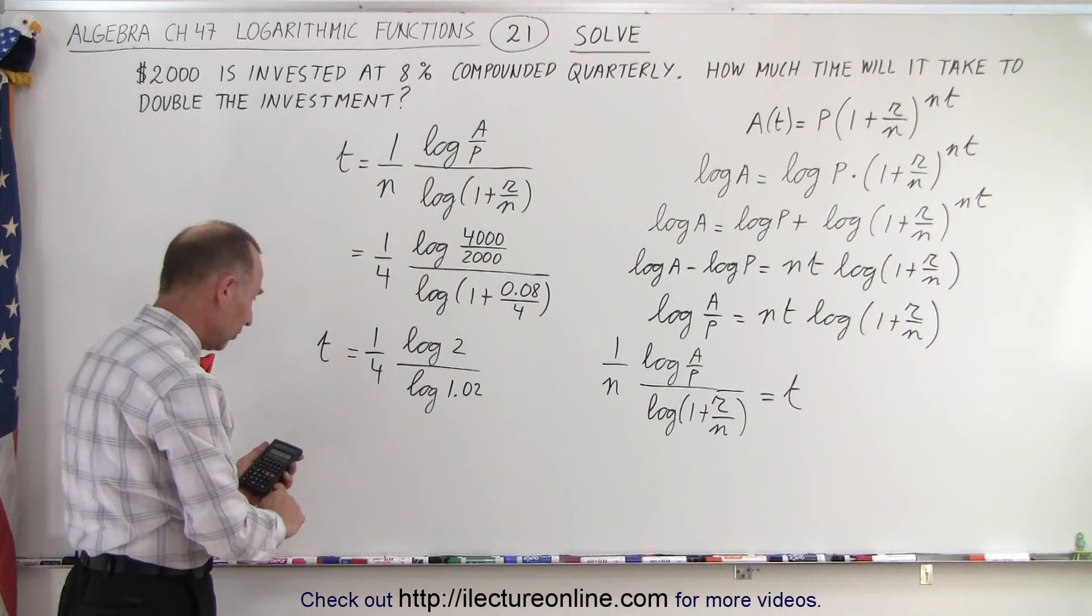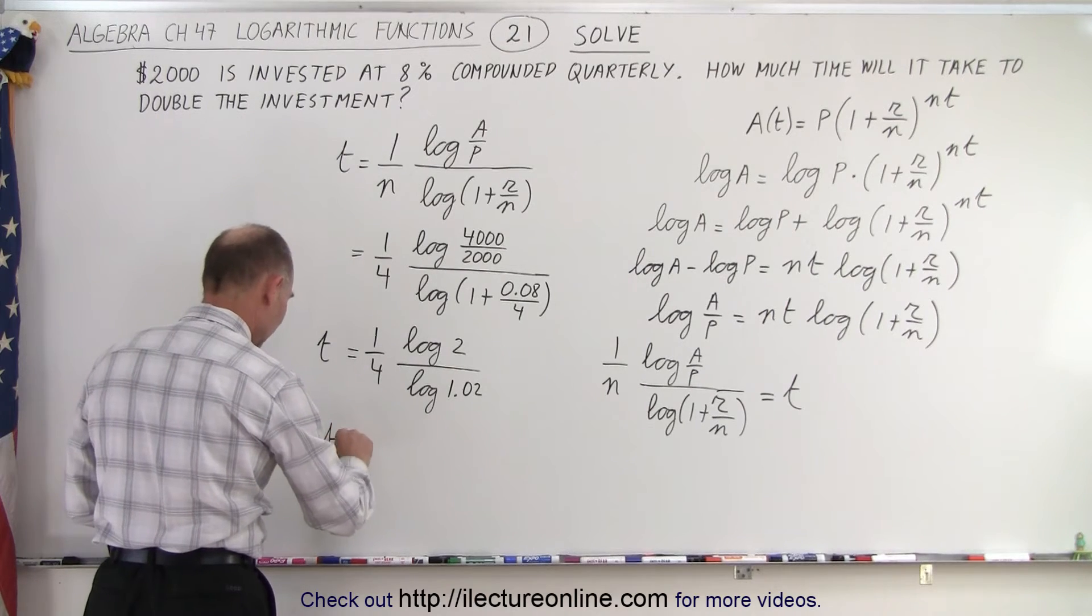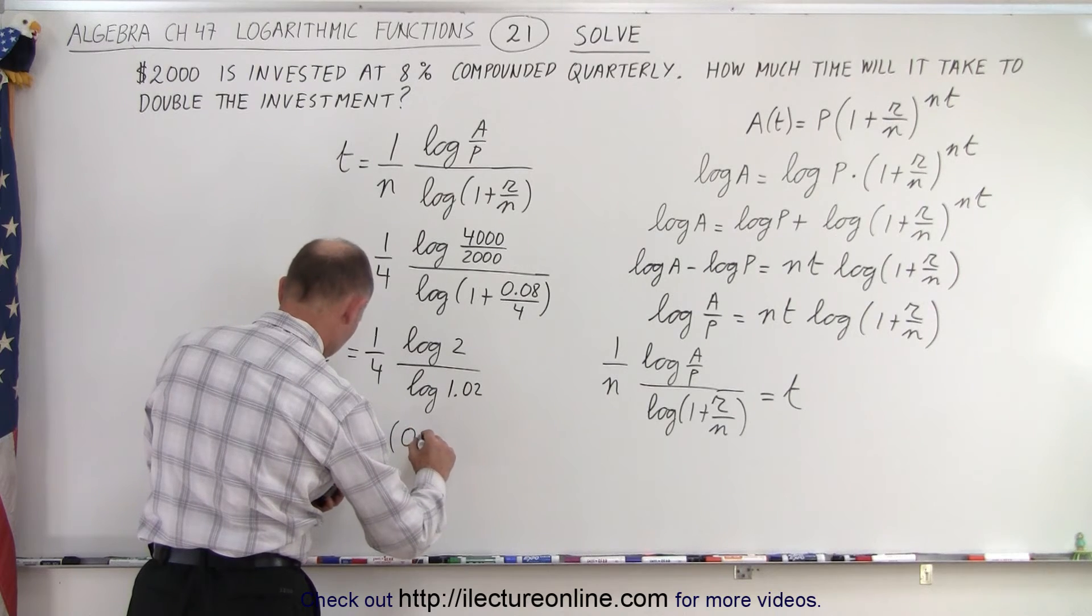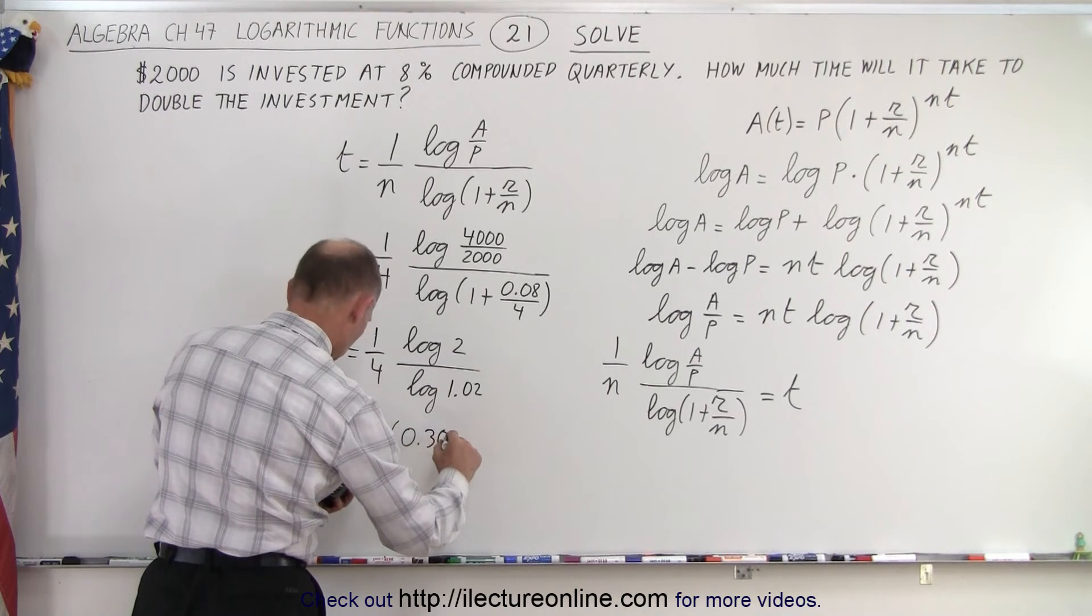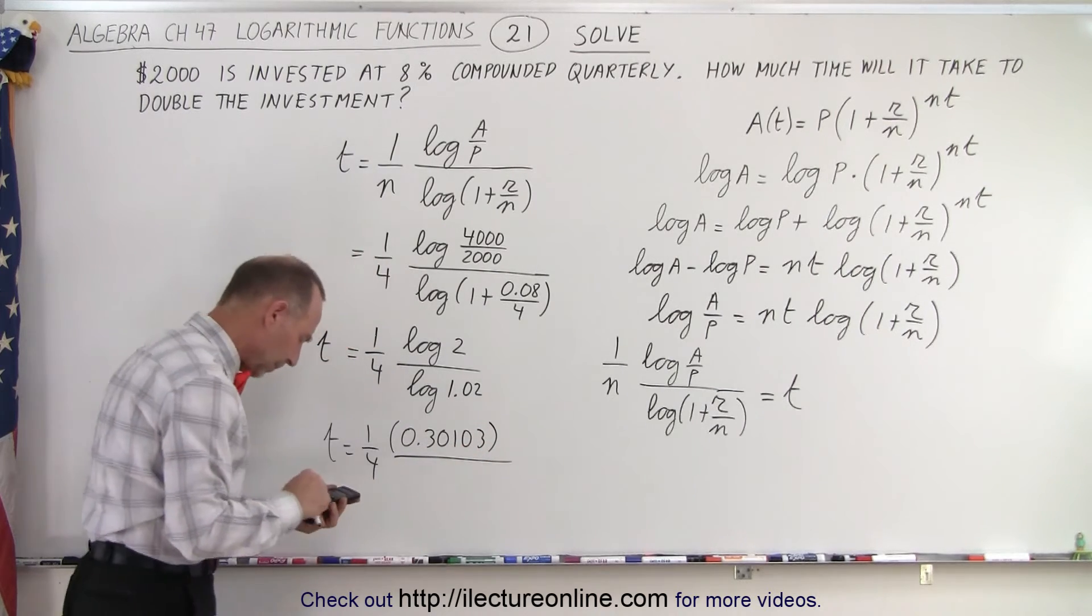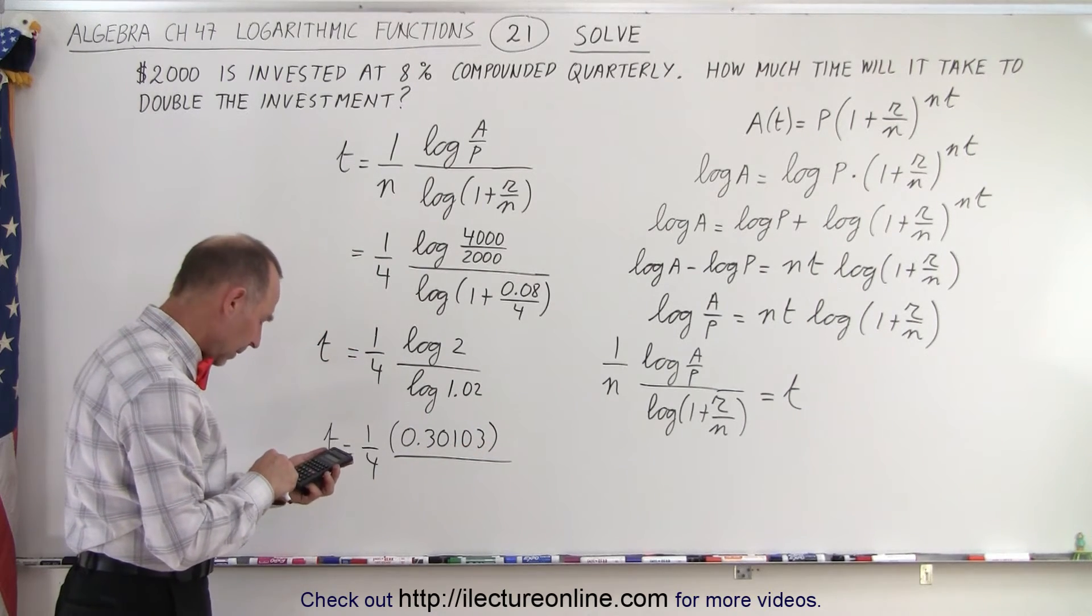And I'll write down the intermediate values. So t is equal to one quarter times the numerator, which would be 0.30103.